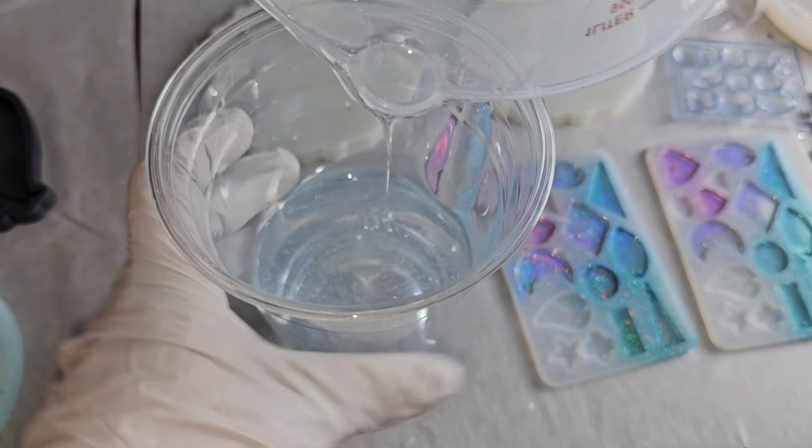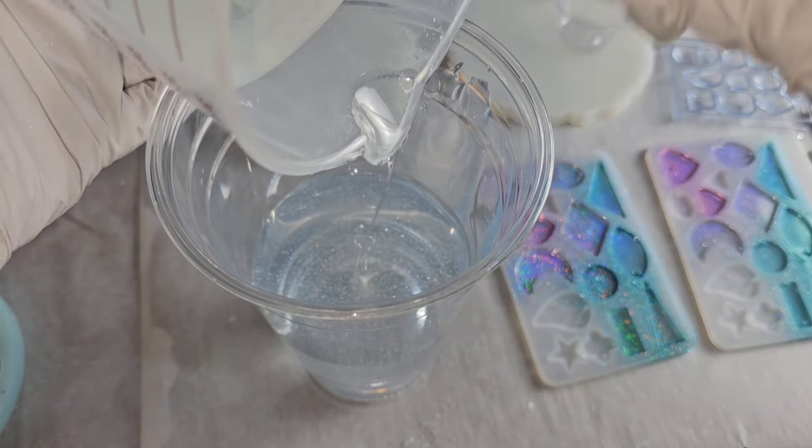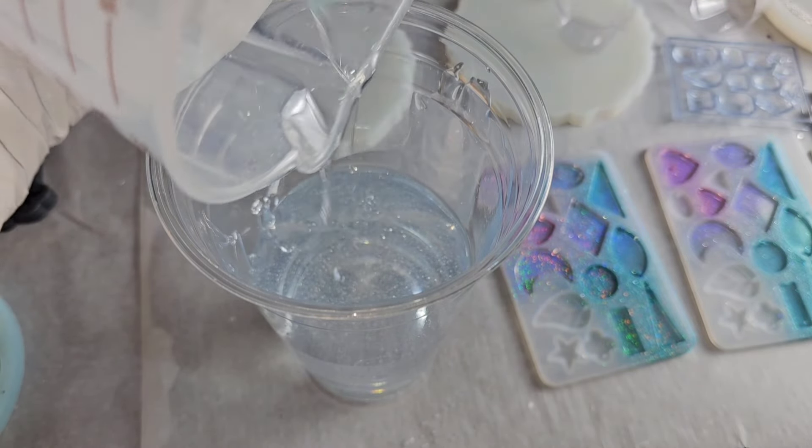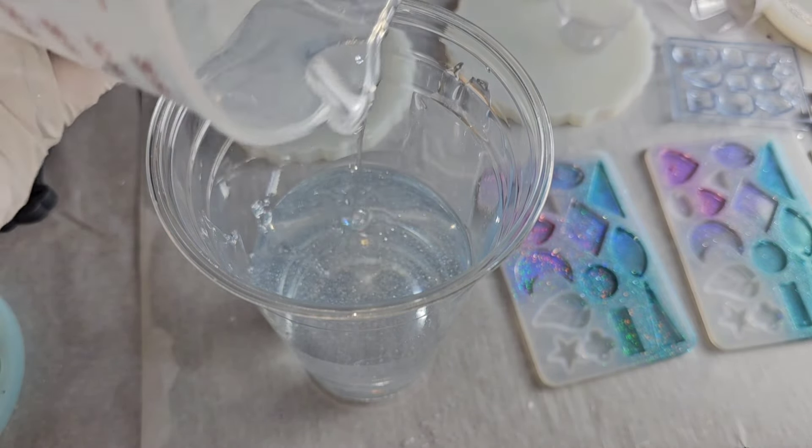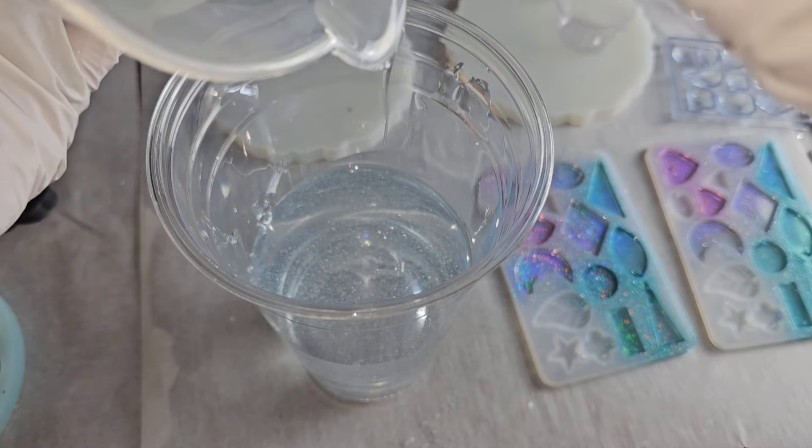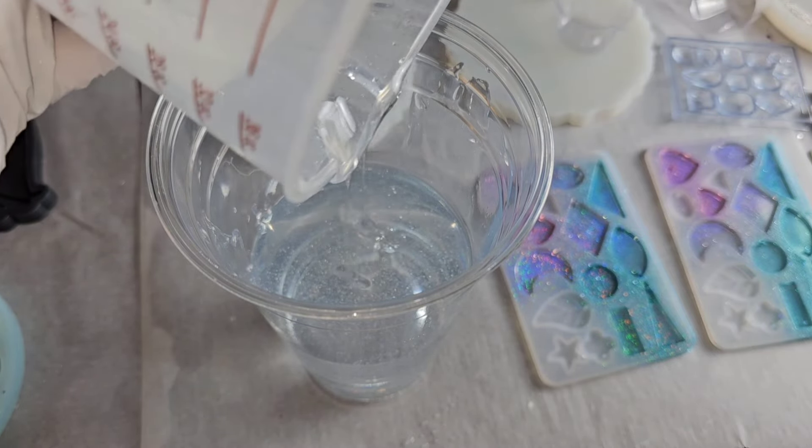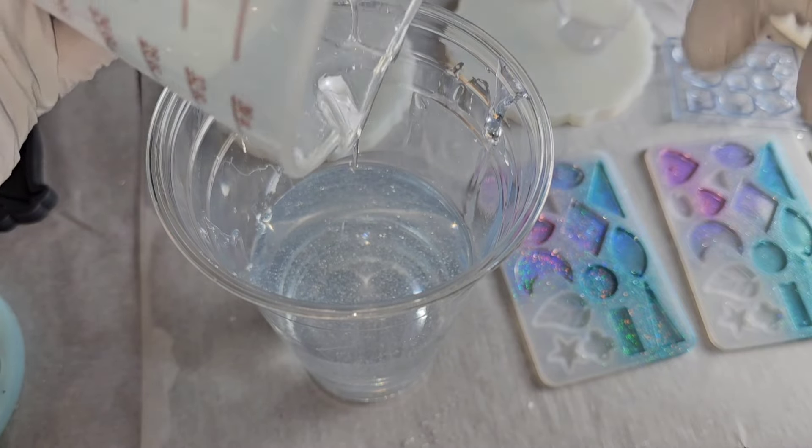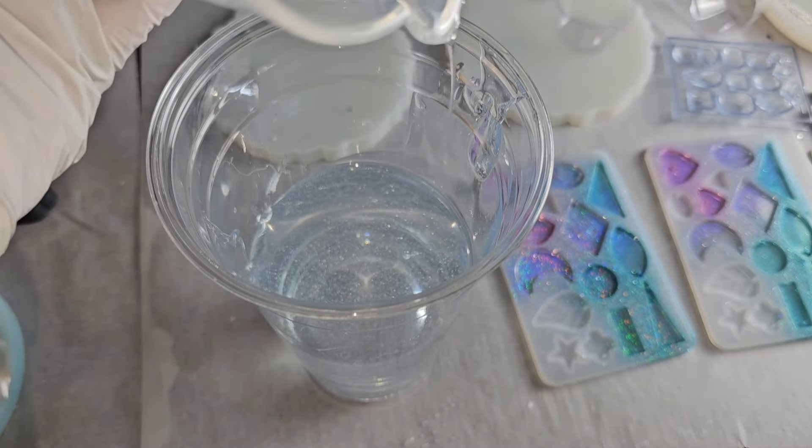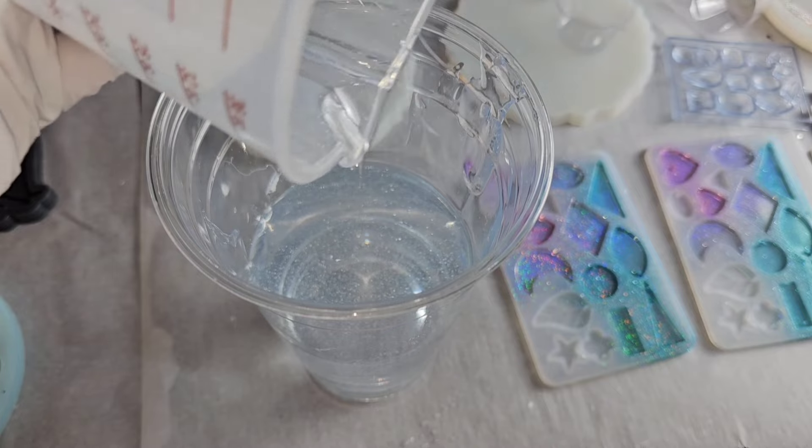So I mix it up for three minutes and now I'm taking that mix and I'm pouring it into a new clean cup and I'm scraping every single drop out of that first cup that we had. Your parts A and B need to be completely equal. So it is critical that you scrape every drop out of that first cup. This is also why a spatula comes in handy.